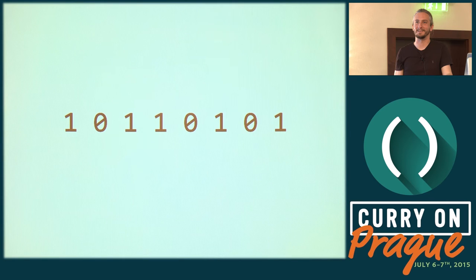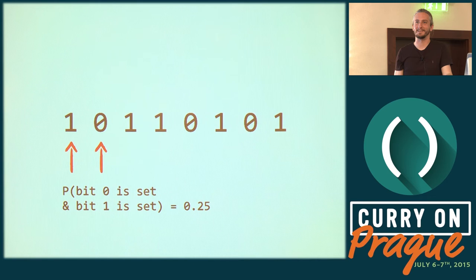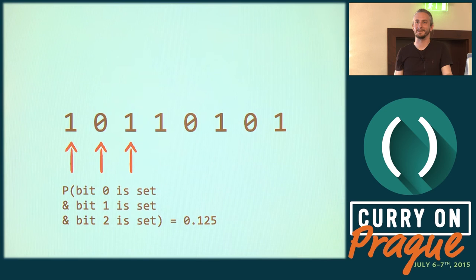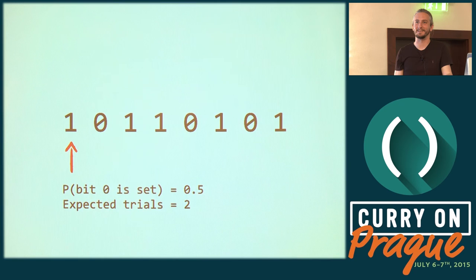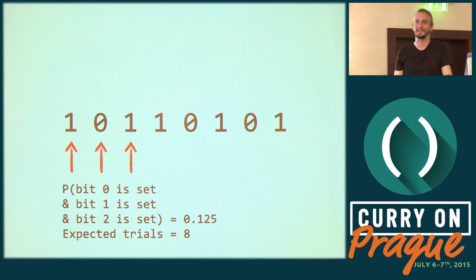What do we know about this number? It's part of a uniform distribution — ideally, anyway. Another way to say that is that the probability of any individual bit being set is 50%. That means the probability of one specific bit being set and another specific bit being set is 25%, and 12.5% for three of them. We can turn those probabilities into expected number of trials: one bit set means expected trials of two, two bits set means four, three means eight. So expected trials is equivalent to, on average, the number of unique items we have seen until we expect to see that particular number of set bits.